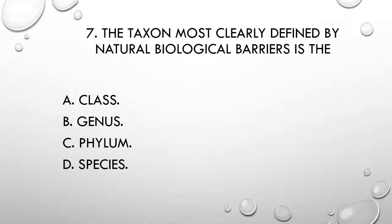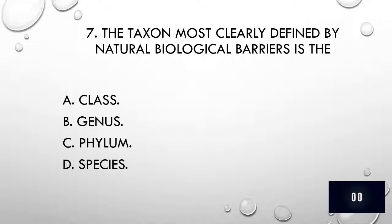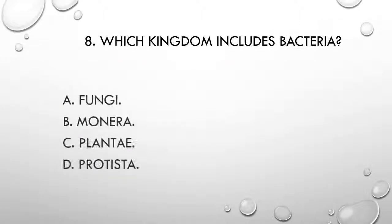Question 7. The taxon most clearly defined by natural biological barriers is the: A) class, B) genus, C) phylum, D) species. The correct answer is D, species.